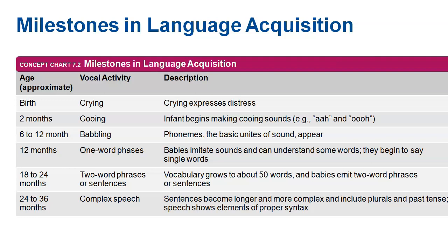Then babies start cooing — just making random sounds like 'ooh, ah' — which are essentially the different vowels. Then around six to twelve months you see babbling, which are phonemes — just random sounds with no meaning. This is also where you hear sounds that don't exist in the English language; babies make clicking noises and phonemes from different cultures. Through exposure and what gets parents' attention — like if it sounds like 'da-da' they get more praise — they eventually settle into only speaking the 44 phonemes of the English language.